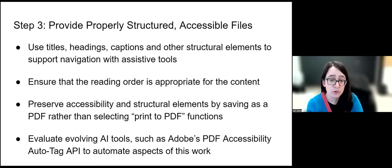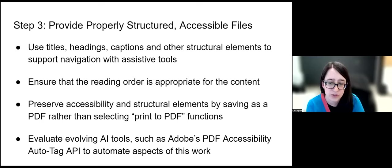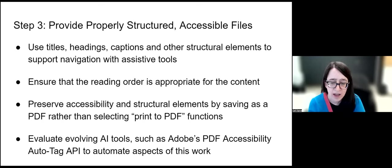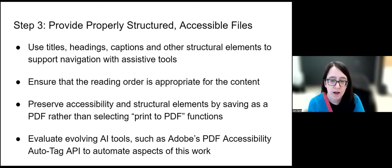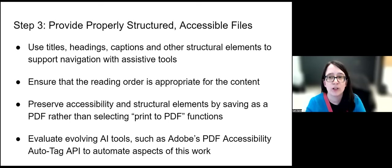There are AI tools coming in this area. You want to have part of your workflow be a continuing evaluation of these AI tools. Adobe has their PDF Accessibility Auto Tag API, which can automate aspects of this work to make it much faster, and can then be checked by someone who manually goes through to verify and make corrections. As these tools get better, they might be part of an automated workflow for historical documents that you weren't able to devote the time to manually changing.